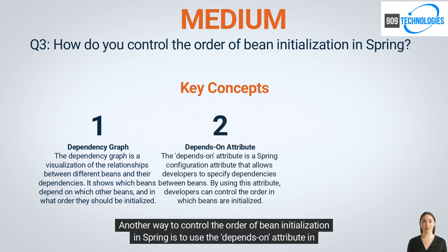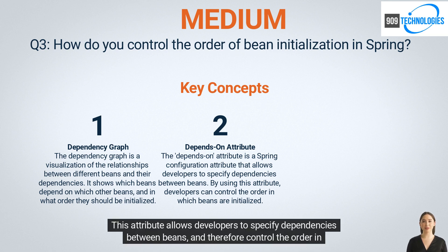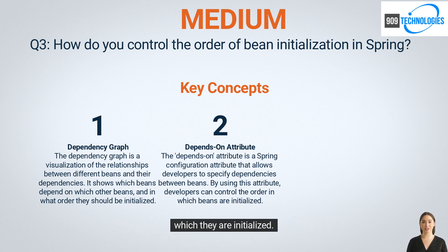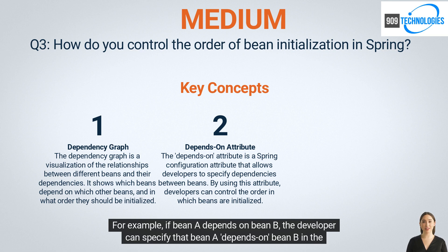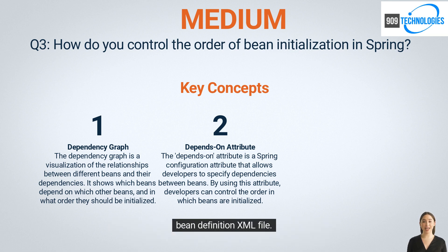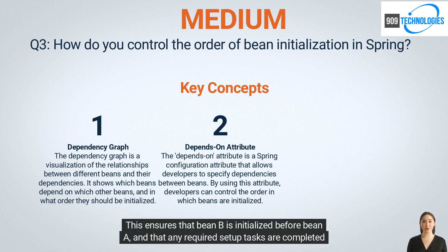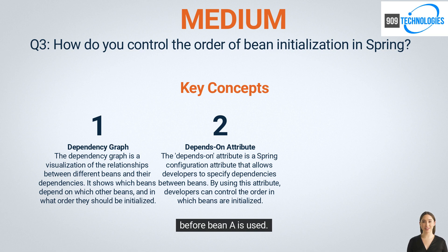Another way to control the order of bean initialization in Spring is to use the depends-on attribute in the bean configuration file. This attribute allows developers to specify dependencies between beans and control the order in which they are initialized. For example, if bean A depends on bean B, the developer can specify this in the bean definition XML file, ensuring that bean B is initialized before bean A and that required setup tasks are completed first.